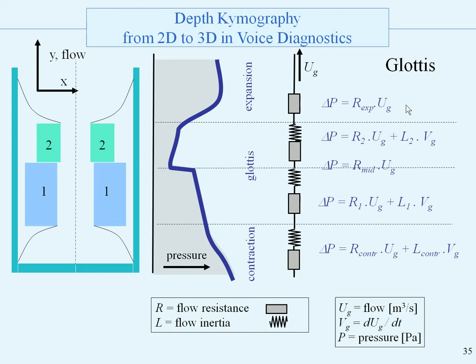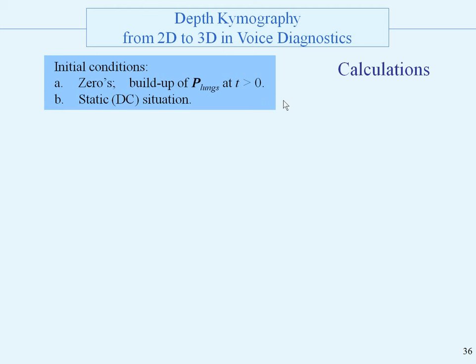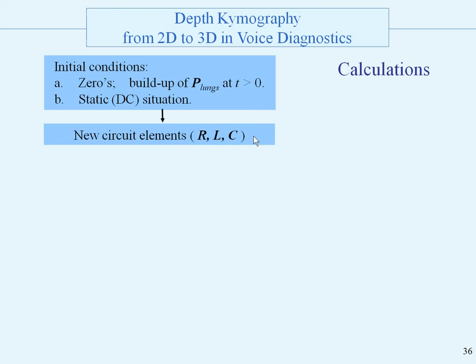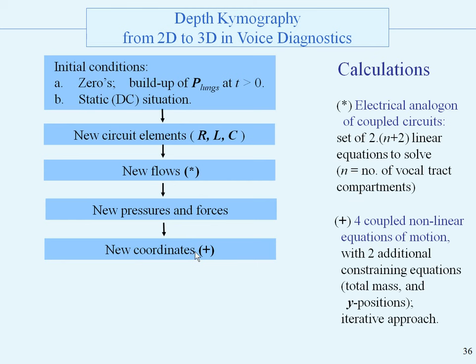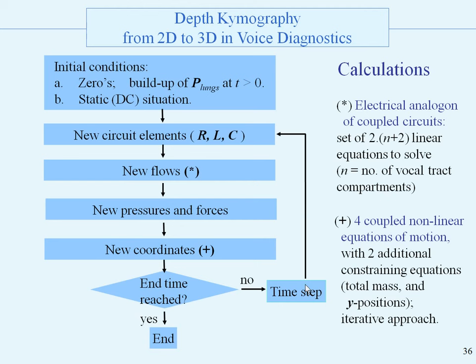The calculations can start either from zeros, building up from the lungs, or we can use the static situation. We first calculate new circuit elements, then new flows using the electrical analogon of the coupled circuit. We need a set of 2 × N plus 2 linear equations — more than 100 linear equations to solve. From that we calculate new pressures and forces, then using the non-linear equations of motion we calculate new coordinates. We then check if the end time is reached; if yes, we are finished; if no, we perform a time step and repeat the whole scheme.